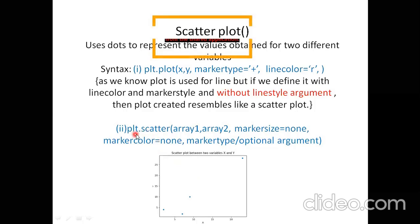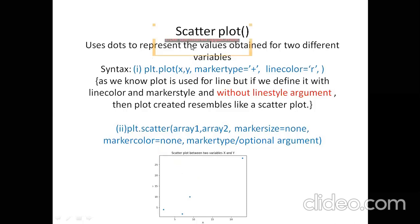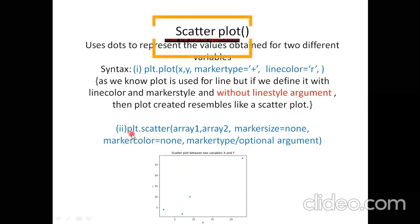For drawing scatter graphs, we usually use plt.scatter. plt is the acronym we use instead of matplotlib.pyplot because we defined at the start: import matplotlib.pyplot as plt. plt can be anything you define in your import statement. With plt.scatter, you pass your x and y axis data — for example, array one and array two. By default, the first data passed is taken as x and the second as y.